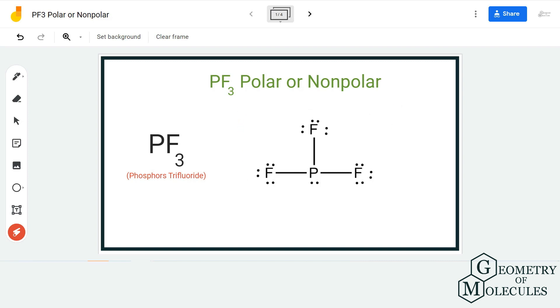So this is a Lewis structure of PF3 in which the phosphorus atom is in the center and fluorine atoms are forming a single bond with this central atom. Besides that, the phosphorus atom also has a lone pair of electrons which does not participate in any bond formation.